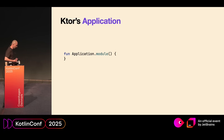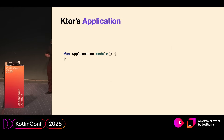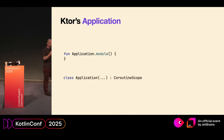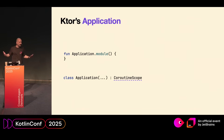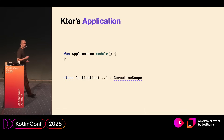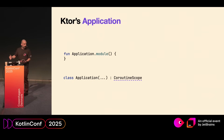So what if you need to create coroutines that do not belong to a route but belong to your application? Luckily, the application is also a coroutine scope. This coroutine scope has the same lifecycle as your application. So when the application starts, this coroutine scope is available to you. And when the server shuts down, this coroutine scope will be cancelled, and it will await all your coroutines to be completed before the server is considered completely shut down.